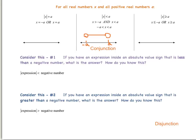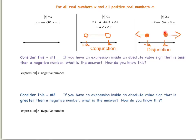When the absolute value of x is greater than a, or greater than or equal to a, we have what is called a disjunction. A disjunction is a compound statement that uses the word 'or.' What that means for us is that x will be less than or equal to negative a, or x will be greater than or equal to positive a. This time my points are filled in because we're using the less than or equal to sign and the greater than or equal to sign.